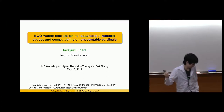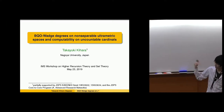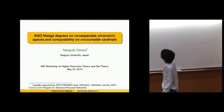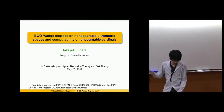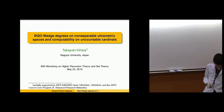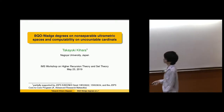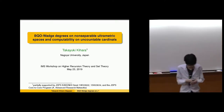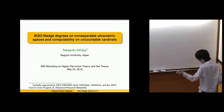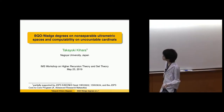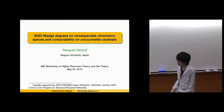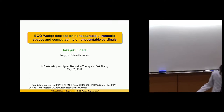Kappa-omega is a candidate for the space having a nice Wadge degree structure compared to kappa-kappa. This is the first step to going to the generalized Baire space — it is intermediate between omega-omega and kappa-kappa. Today I want to talk about the Wadge degrees on kappa-omega.